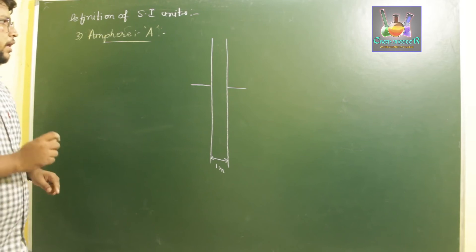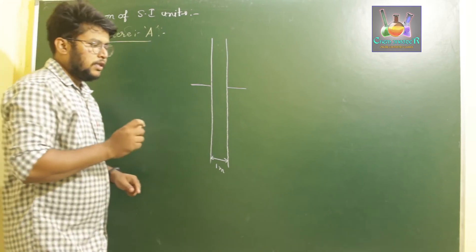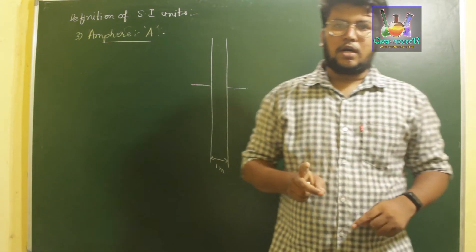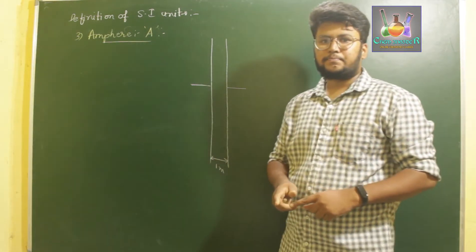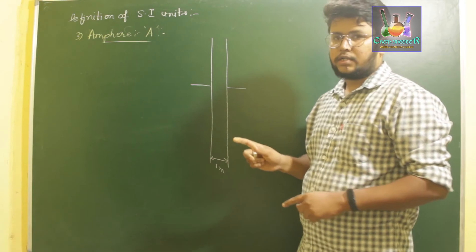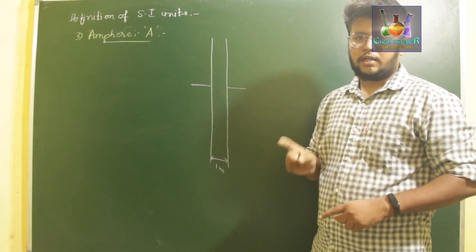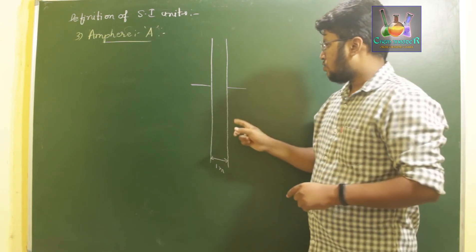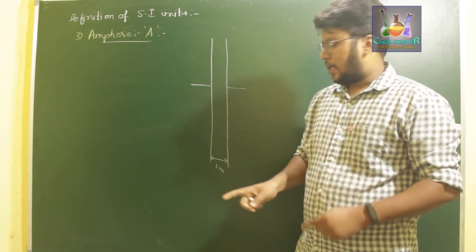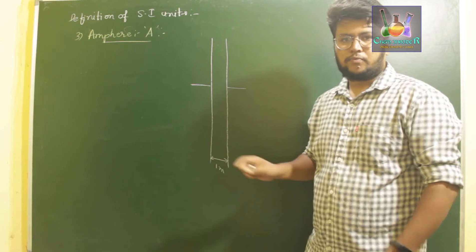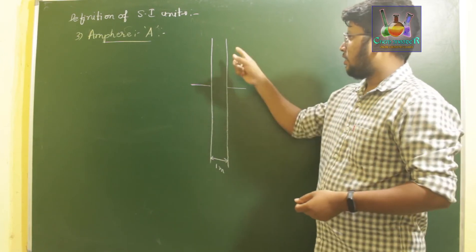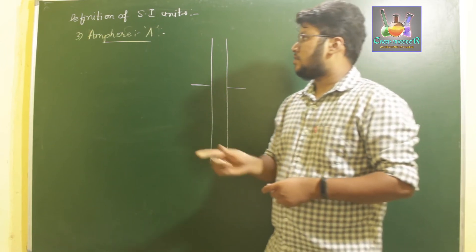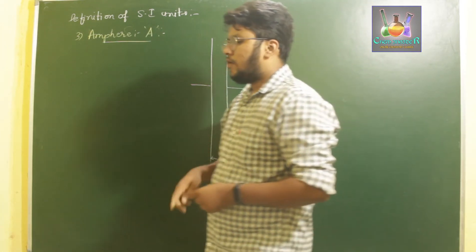One ampere is the current generated by two conductors parallel to one another, with infinite length and very negligible cross-section, placed in vacuum and one meter apart from each other. This is the definition of one ampere.